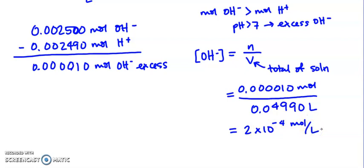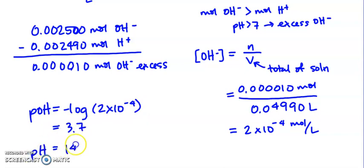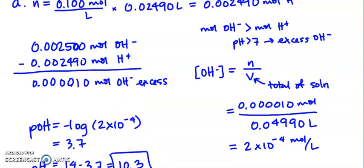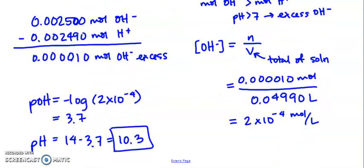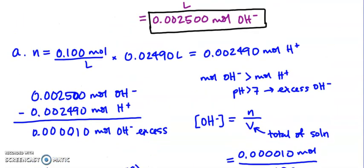So now if I have an OH minus concentration, I can find a pOH, because that's the negative log of that, so 2 times 10 to the negative 4th. So my pOH is 3.7, which means then that my pH is 14 minus 3.7, which is 10.3. So here's my answer to part A, which makes sense. Our pH is greater than 7. We have excess OH minus, so we're in the basic range.